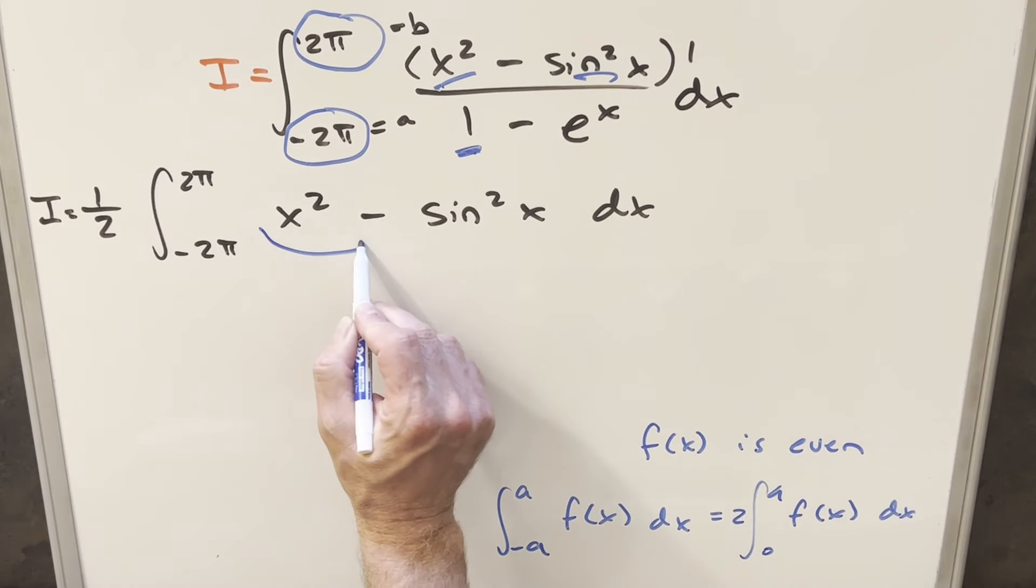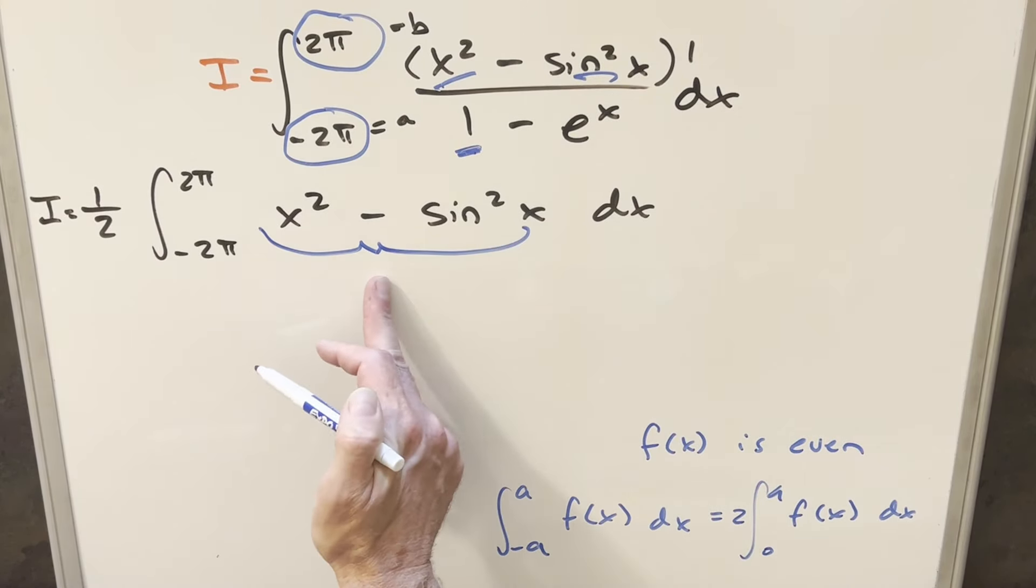Now from here, what we can notice is that our integral, both these are squared, so this is actually going to be an even function here. And that's going to allow us to use this principle. It doesn't help that much, but it just allows us to take the lower bound, this -2π, and change that to 0.